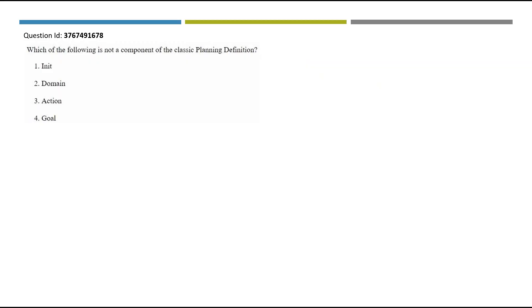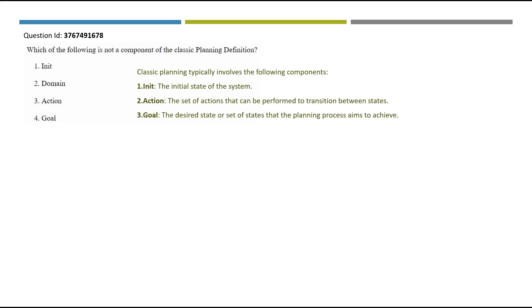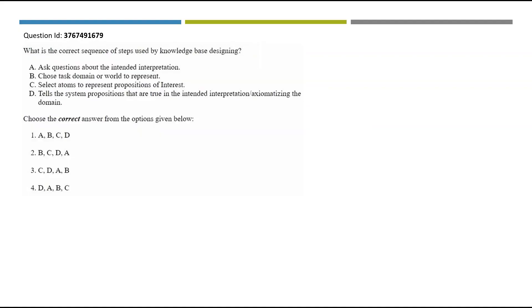The next question asks which is not a component of the classic planning definition. Classic planning typically involves: init (the initial state of the system), action (the set of actions that can be performed to transition between states), and goal (the desired state the planning process aims to achieve). Option two, domain, is the right answer — domain cannot be restricted to a particular state of a system and is not a component of the planning definition.